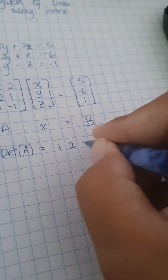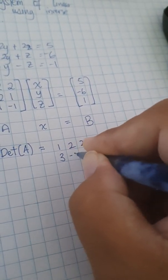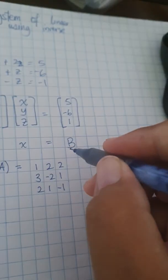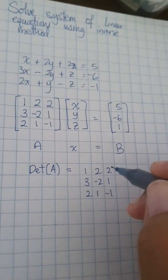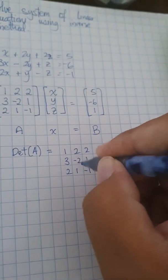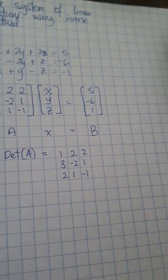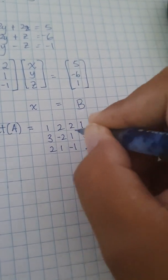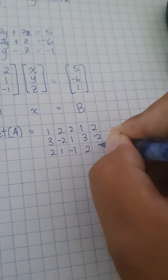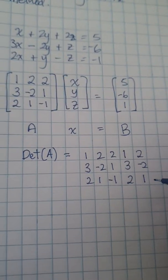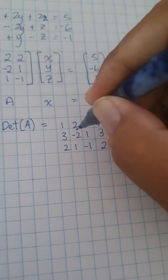So determinant of A, I'll show you the shortcuts. We write out the determinant: 2, 2, 3, negative 2, 1, 2, 1, negative 1. Okay, for the shortcuts, I'm going to see the matrix A. We write column one, then we write column two on the right side. So we have 1, 3, 2 and 2, negative 2, 1.